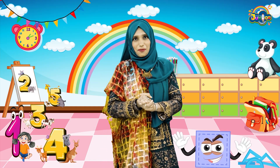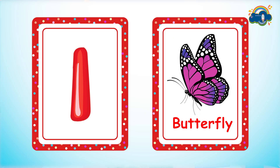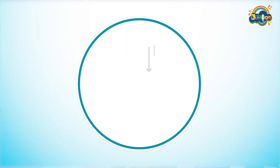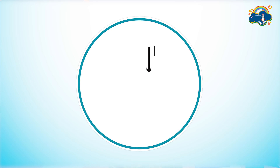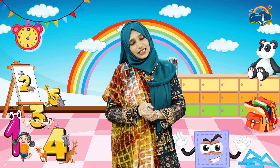Our first number is number 1. One butterfly. For writing number 1, draw a standing line from top to the bottom. It's number 1.